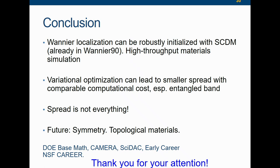Let me conclude. Wannier function localization can now be robustly initialized, for example with SCDM, and hopefully this will be useful for high-throughput materials calculations. You can do variational optimization even for entangled bands. Spread is not everything — hopefully that is a take-home message. Future directions include symmetry restoration and topological materials. I heard just yesterday during the poster session that Dr. Vitali has already made very promising progress along this direction. Hopefully, we'll see that happen in the near future. Thank you very much.